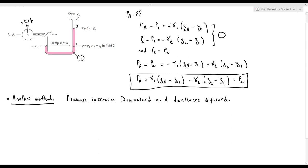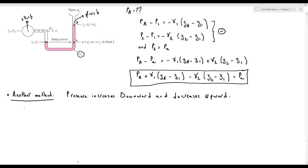We start at the chamber and finish at point 2, going through the tube. At the chamber we have pressure PA. If we go to the right in a straight line, the pressure will not change since there is no change in level. Then we go downwards, so the pressure increases — we put a plus sign — plus gamma1 times the absolute value of the difference in elevation between ZA and Z1.